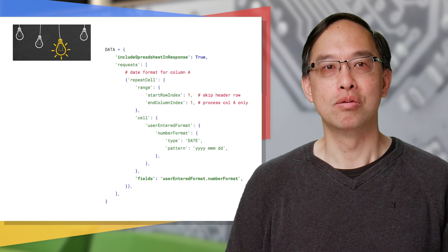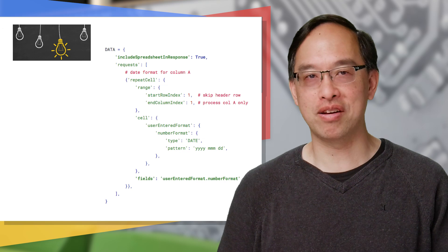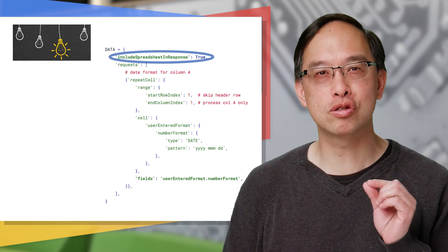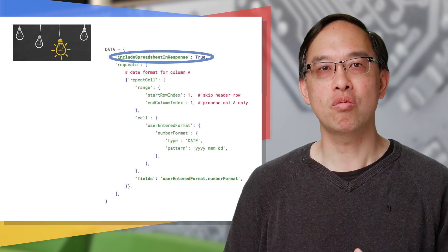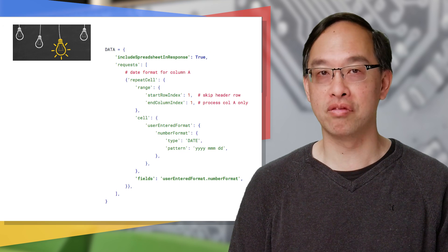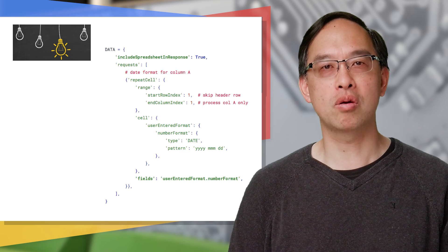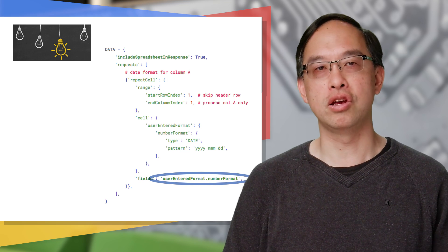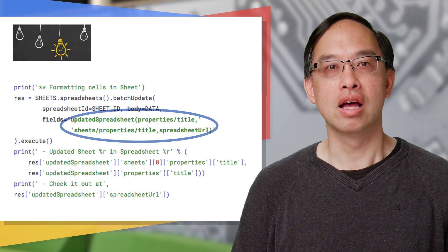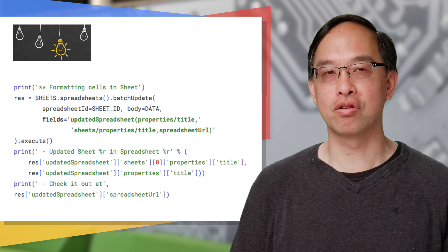Tip four: to complete our journey, here's another read-plus-write example that uses both read and write field masks. The example updates a Google Sheet, but it has this includeSpreadsheetInResponse flag you see here. That requests the updated sheet data be added to the response payload, which can then be filtered, limiting the amount of data returned. The data has a header row and a first column of timestamps where the update changes the timestamps to just the date in year/month/day format. In the code, we request the API return just the sheet's name and URL plus the names of all the individual sheets.